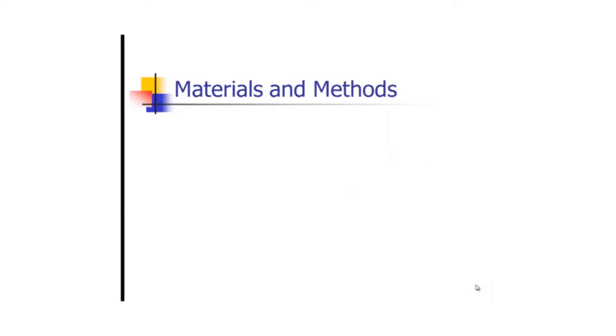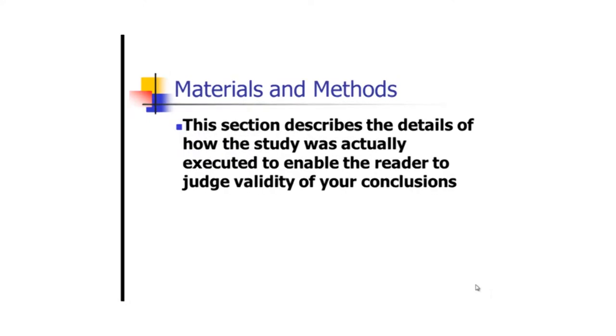Materials and methods will describe the details of how the study was actually executed to enable the reader to judge the validity of your conclusions. This is a very important section that you must write very precisely. The findings you report will be judged based on your methodology. If you said you're going to adopt probability sampling but then change to non-probability sampling, purposive maybe, and use statistics assuming a probability sample, people will throw away the entire paper. You cannot use statistics based on a probability sample while you use a non-probability approach.